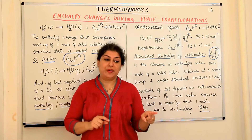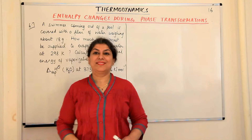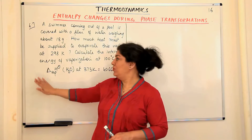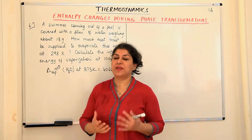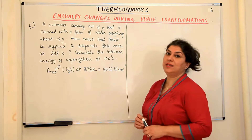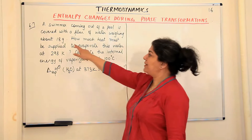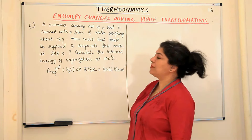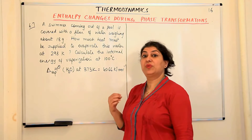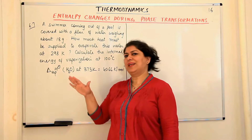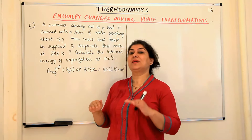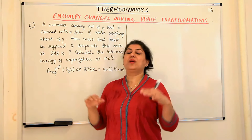Now we do a solved numerical from the NCERT textbook — example 6.7. A swimmer coming out of a pool is covered with a film of water weighing about 18 grams. How much heat must be supplied to evaporate this water at 298 Kelvin? Remember, water evaporates at all temperatures. Since enthalpy is a state function, it doesn't matter at what temperature the change takes place — the enthalpy change is the same.